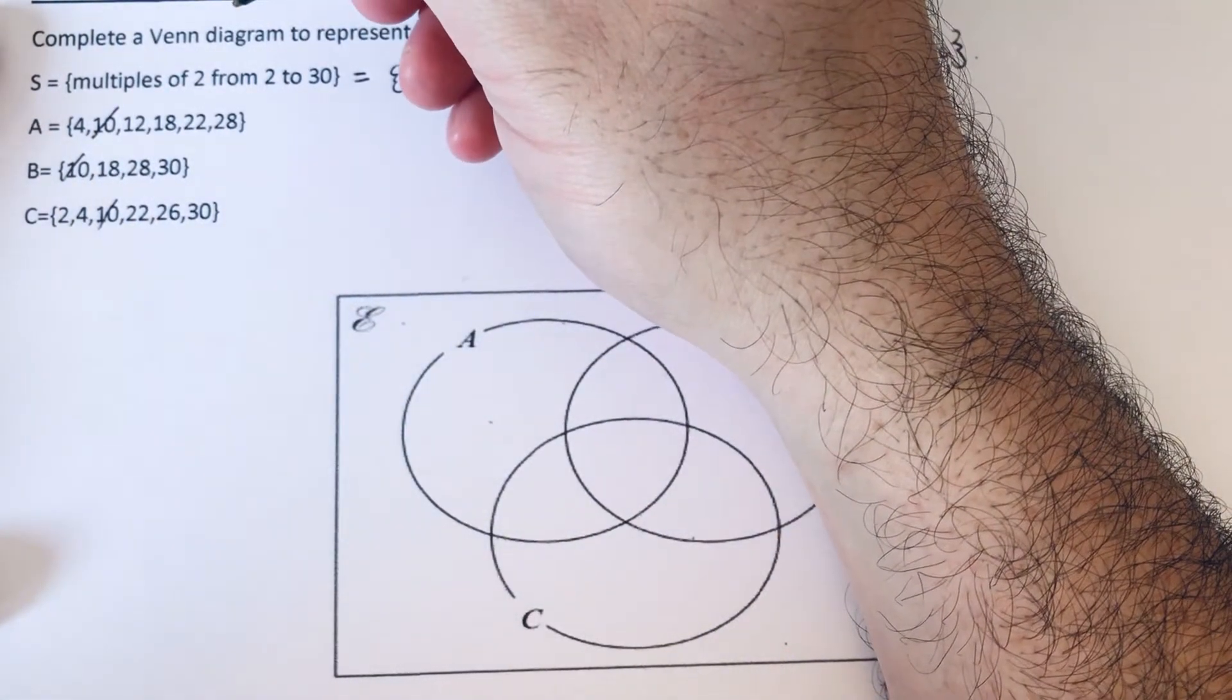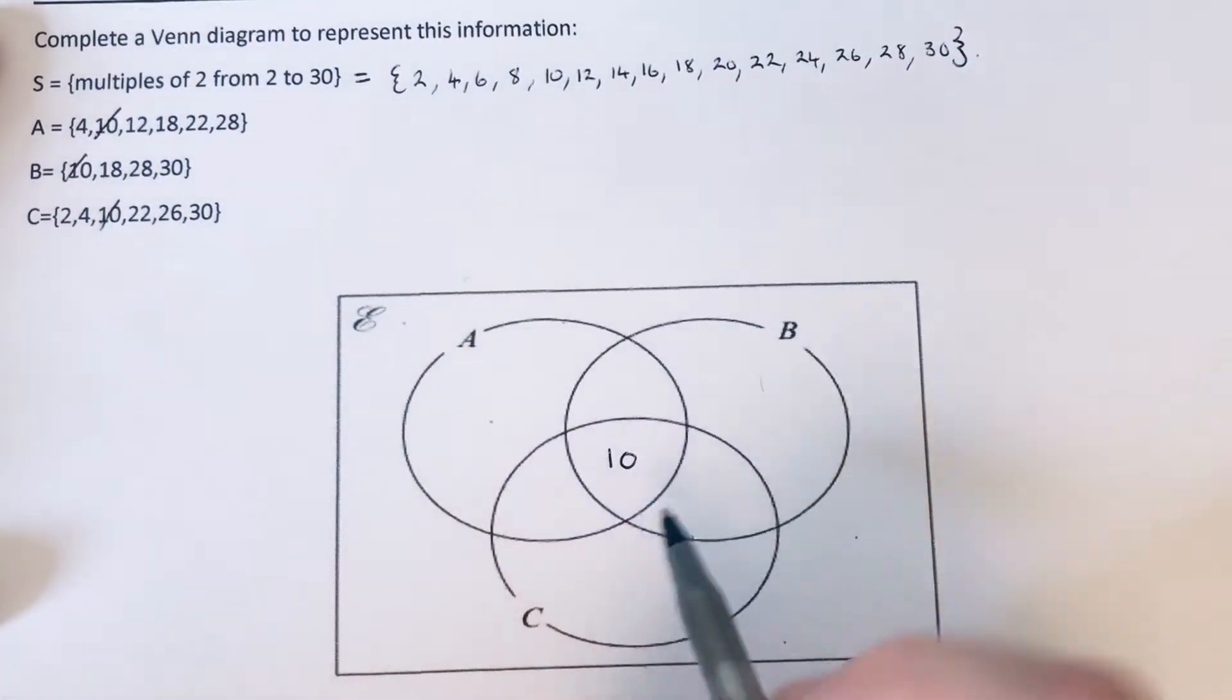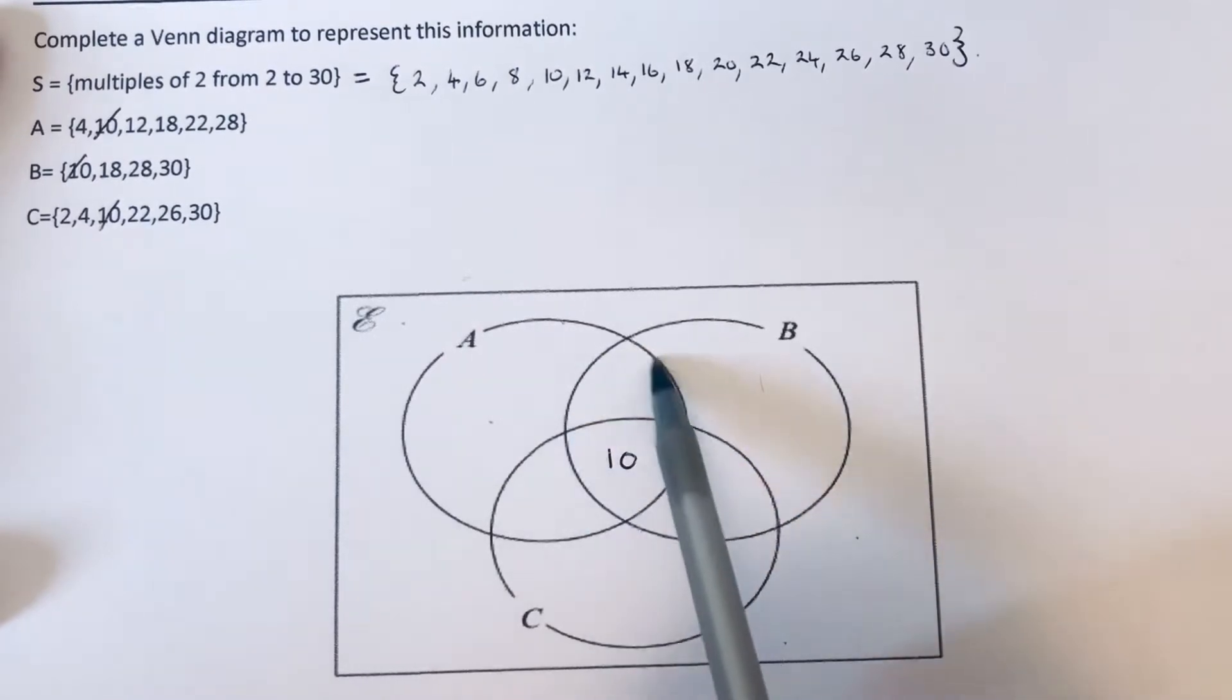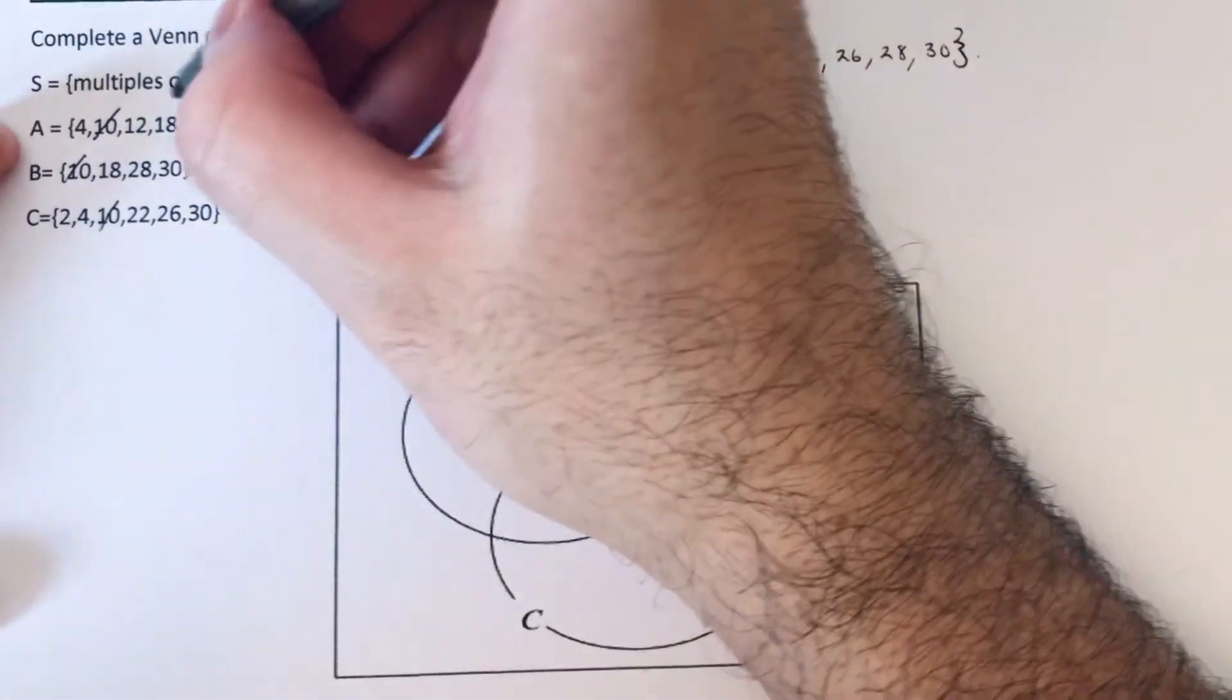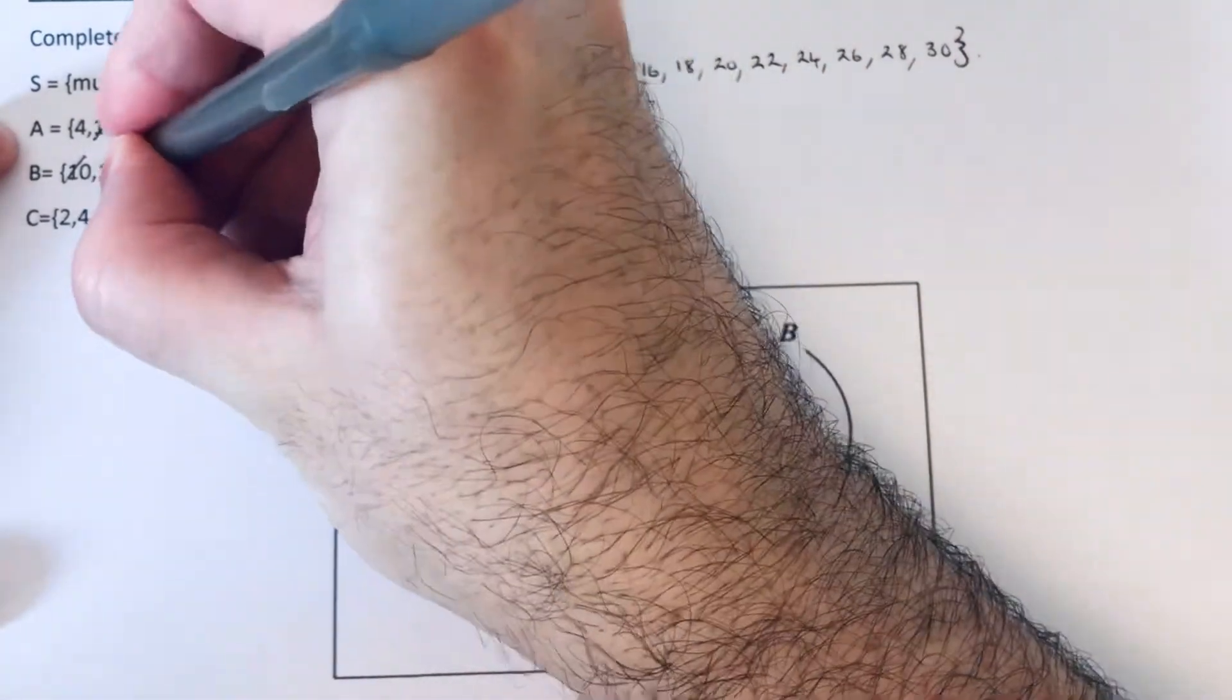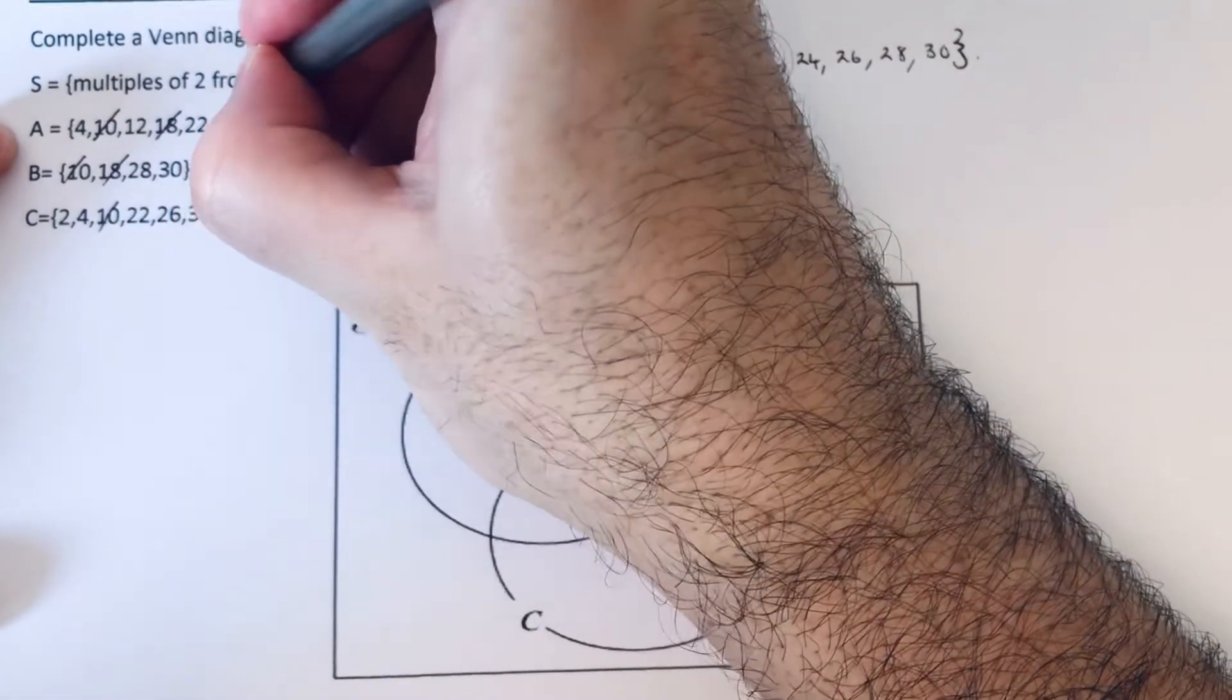So let's do this little bit here next. These are the numbers which are in A and B but not C. So we're looking at A and B. We've got the number 18 in A and B. I think we've also got the number 28 in A and B, and that is it.